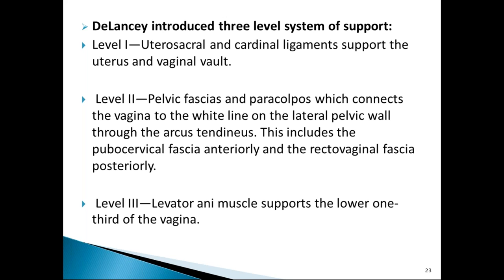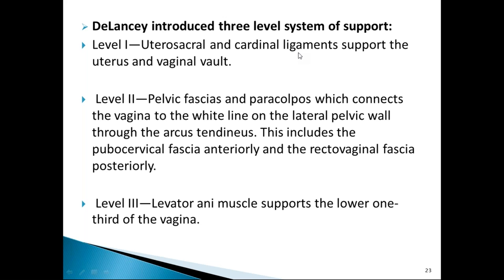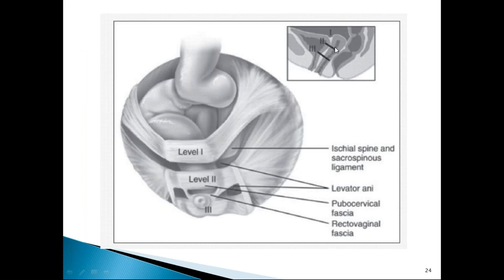DeLancey introduced a three-level system of vaginal support. Level one supports the apex of the vagina: posteriorly by two uterosacral ligaments and laterally by two cardinal ligaments (also called Mackenrodt's or transverse cervical ligaments). Level two consists of the vesicovaginal and rectovaginal fascia between the vagina, bladder, and rectum. Level three is the levator ani muscle.